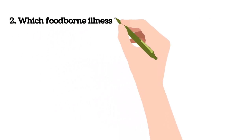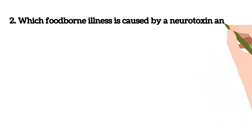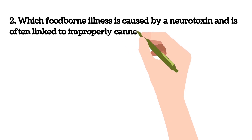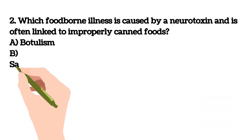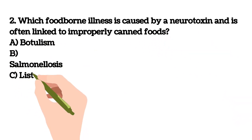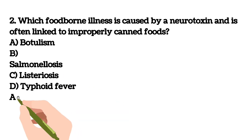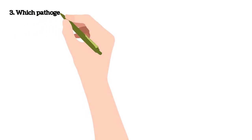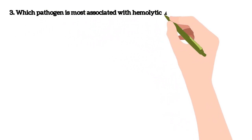Second question: which foodborne illness is caused by a neurotoxin and is often linked to improperly canned foods? A) Botulism, B) Salmonellosis, C) Listeriosis, D) Typhoid fever. Your answer is A) Botulism.